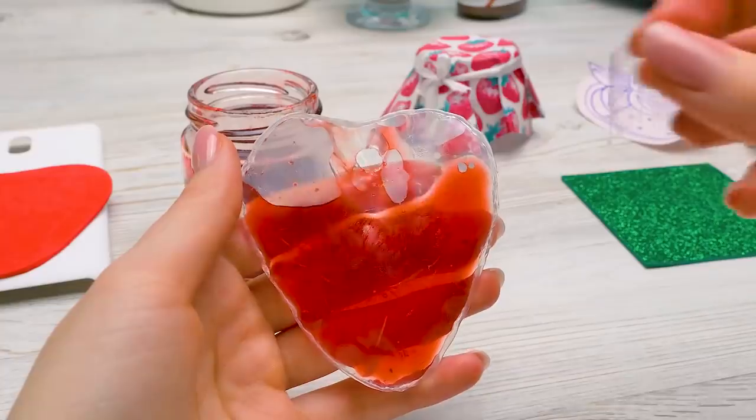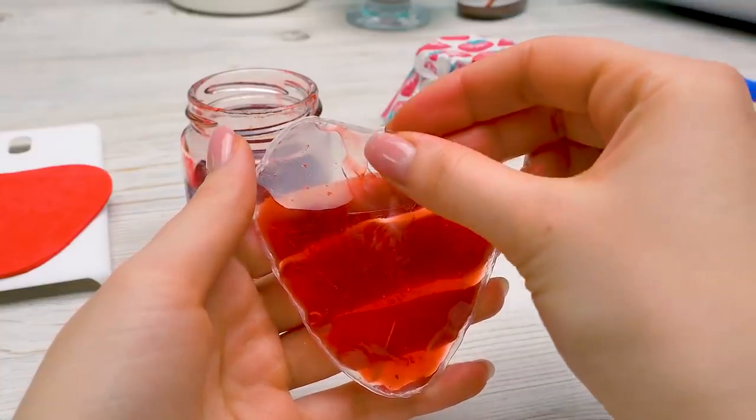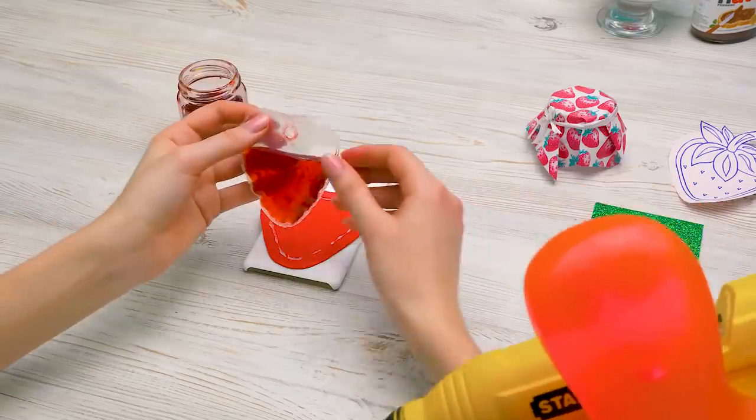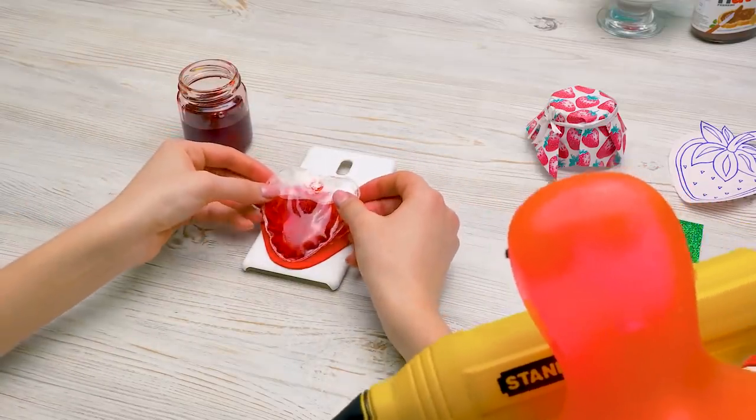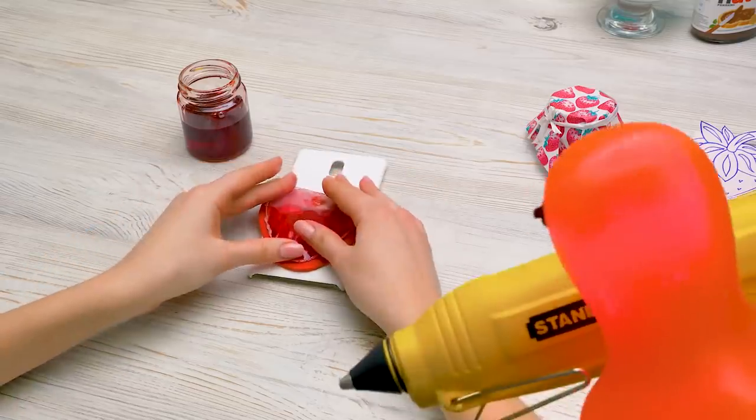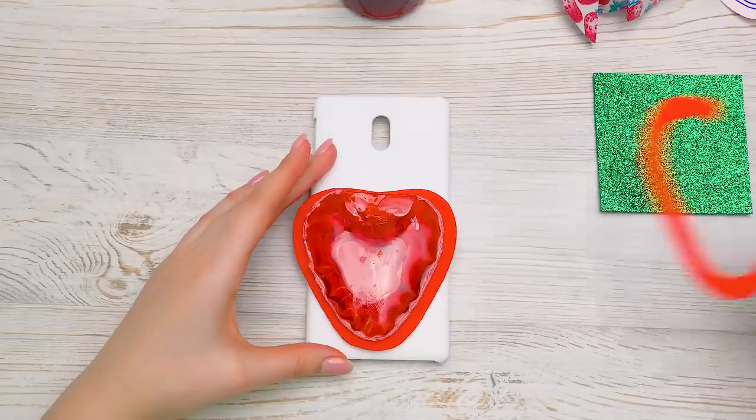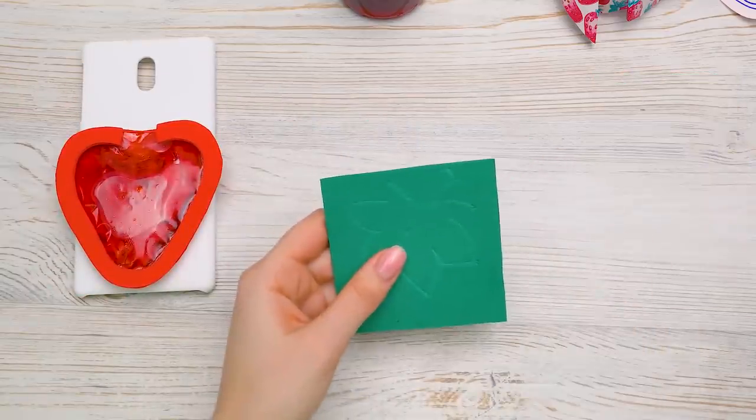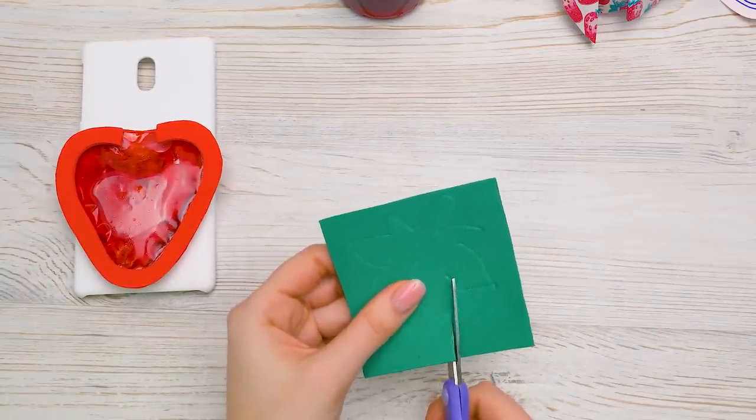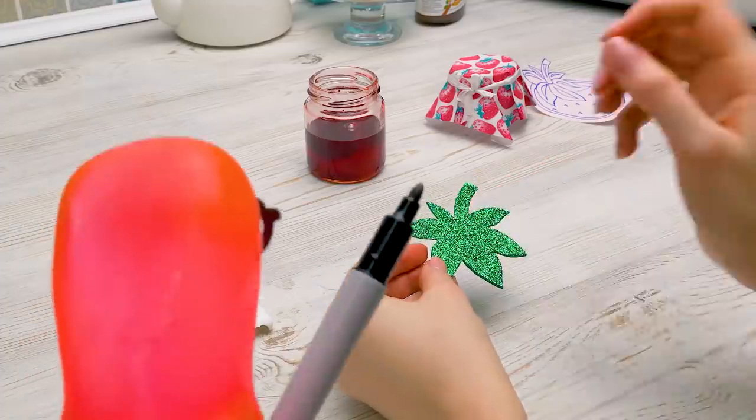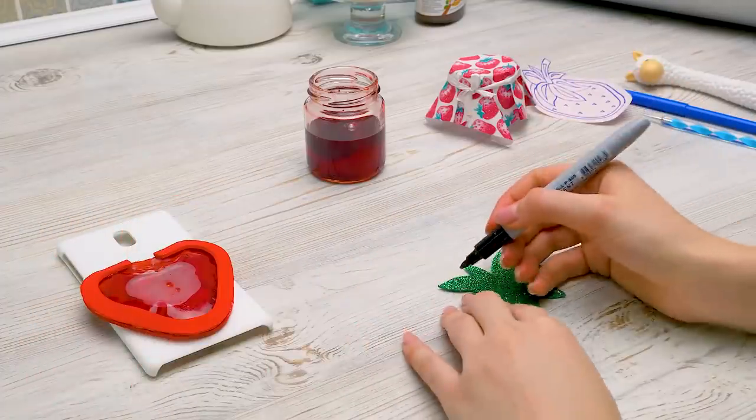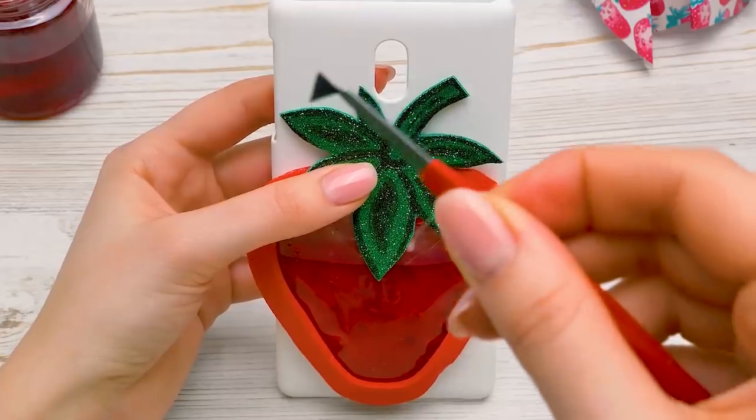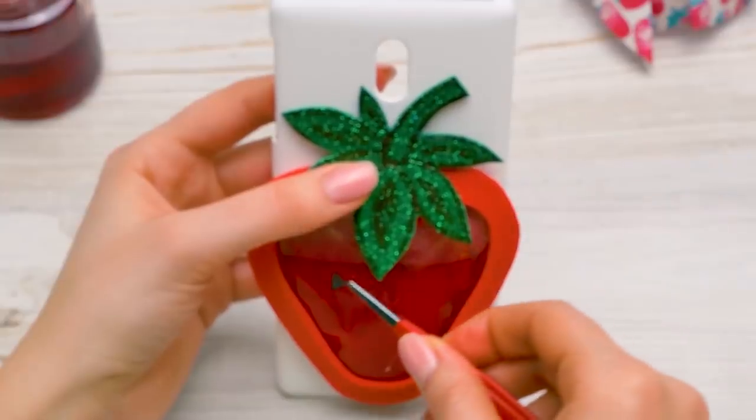This looks cool, Sue! Don't forget to cover the opening to make sure the jam stays inside. And then glue the jam pouch to the phone case. Hurry, Sue! I can't wait! Let's secure it really well. And now cut out the leaves out of some glitter green craft foam. Here, Sue, take this marker! Great! I'll decorate the leaves with a pattern and glue them right here. Let's add some seeds to the strawberry.